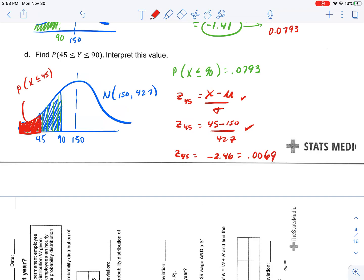So, my final answer is my green area from up above, which is 0.0793 minus my red area, which is 0.0069, which is equal to 0.0724.